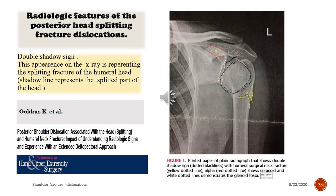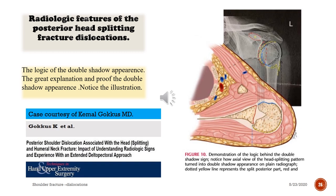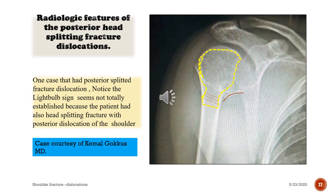Another case from the presenter's archive. Radiologic features of posterior head-splitting fracture dislocations include the double shadow sign — this appearance on X-ray represents the splitting fracture of the humeral head. The shadow line represents the split part of the head. The double shadow reflects the real posterior head splitting.